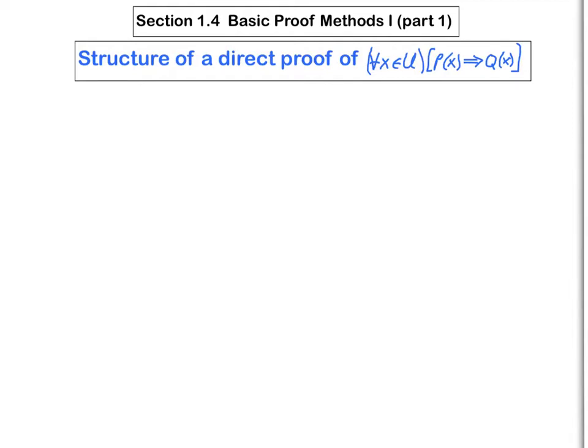We can't pick any specific one that we find convenient. We have to pick a perfectly general one. And after we pick that general x, we have to show that the corresponding conditional statement is true.